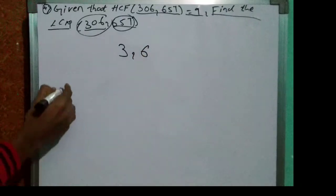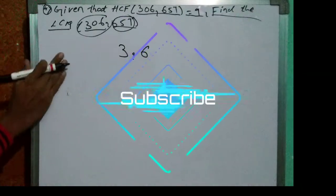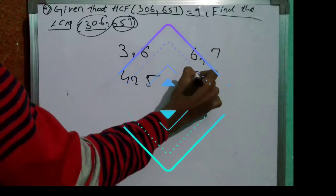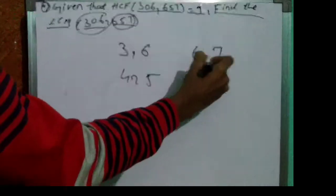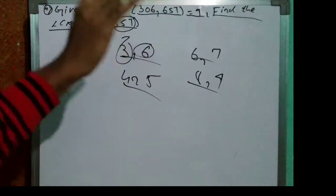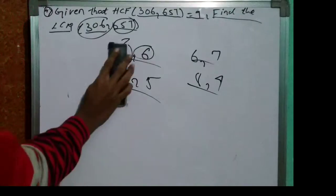Numbers like 3 and 6, 4 and 5, 6 and 7, 8 and 9. These are two numbers. If we know these two numbers HCF, we can find the easy way LCM. So this is the example.